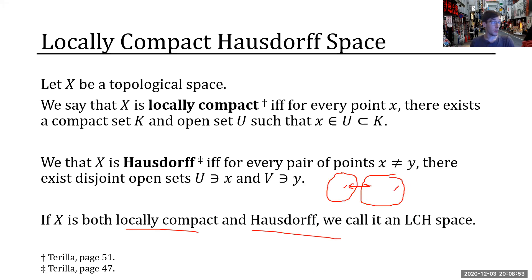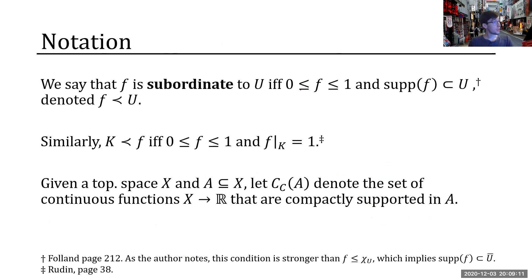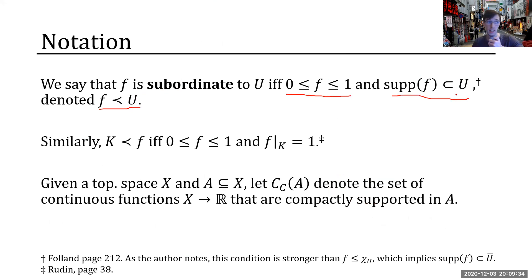LCH spaces are particularly good topological spaces — they let us avoid a lot of pathologies that arise in very general topological spaces, and they happen to be just nice enough to give us another form of the Riesz representation theorem. We say that f is subordinate to an open set U — denoted by a less-than-or-equal sign — if the function takes values between zero and one and its support is contained within the open set.